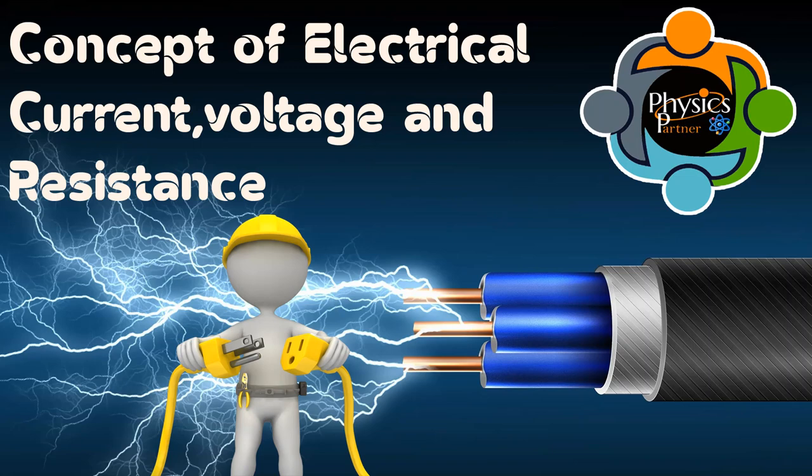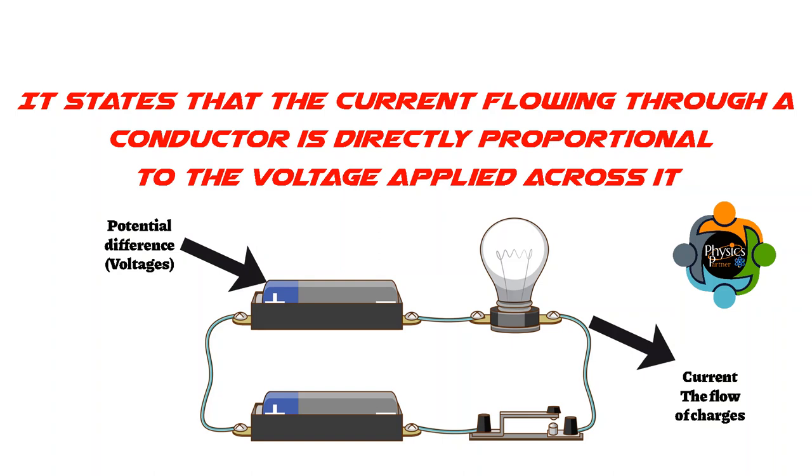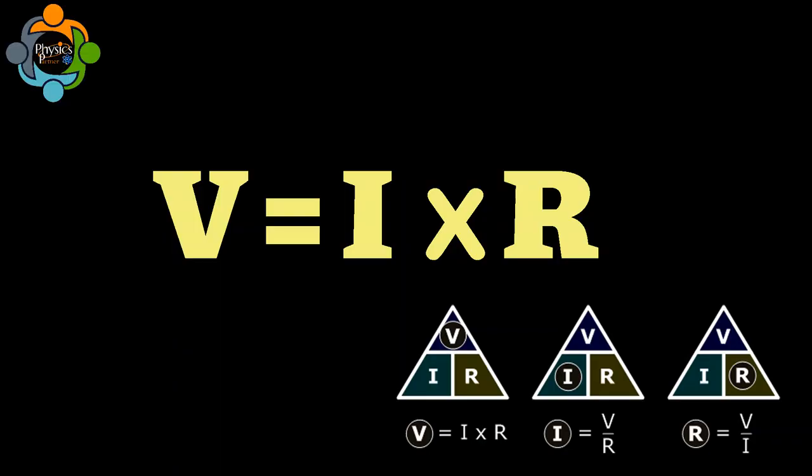This condition is valid if the temperature and other physical conditions remain constant. The formula for Ohm's law is V equals I times R.